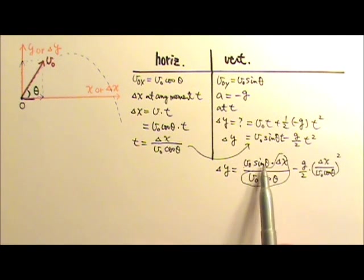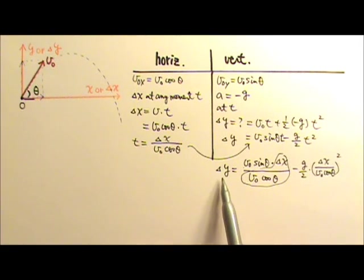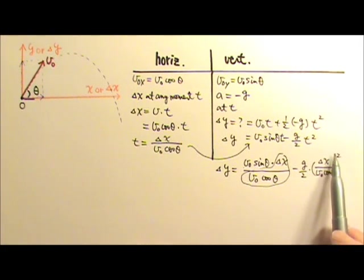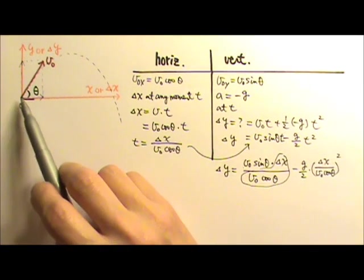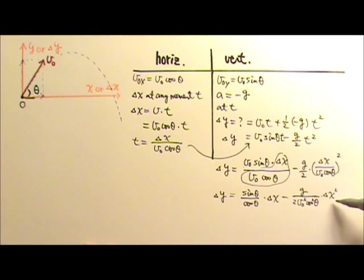All these are constants. So delta y is a second degree equation in terms of delta x. That is why this is a parabola. I can simplify it a little bit and get this. But basically delta y is a second degree equation.